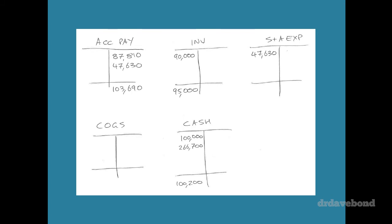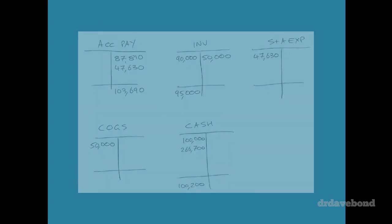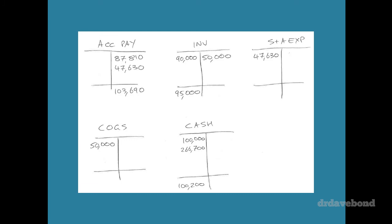Now the thing is cost of goods sold is not what you pay the suppliers for that inventory. It's not even necessarily what you purchased this year. Cost of goods sold is how much you used this year. What we're interested in is how much you purchased this year. So we need two additional accounts. So inventory starts at $90,000 and ends up at $95,000.